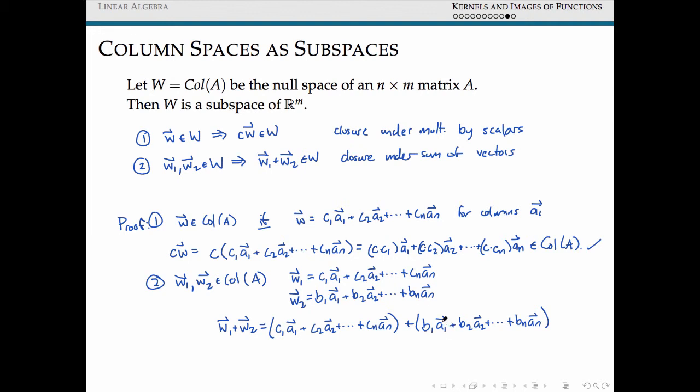Plus our linear combination that gave us W2. We can rearrange so that we write this as the sum of C1 plus B1 times A1, C2 plus B2 times A2, plus Cn plus Bn times An. And this is clearly some linear combination of our columns. So this is also inside the column space of A.